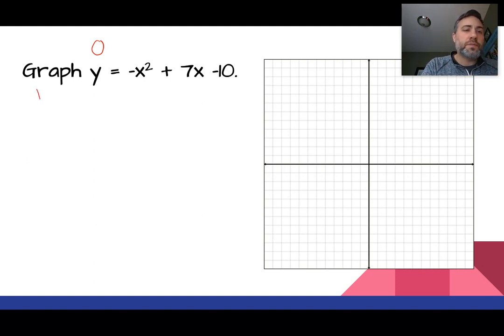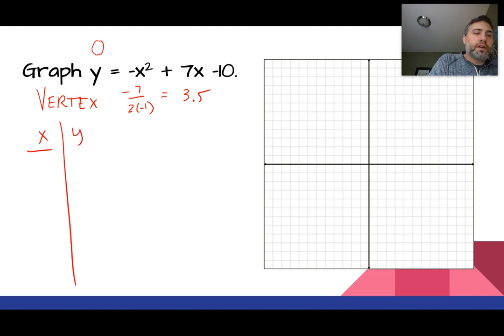So we need to start always by finding the vertex. That's the very first thing we must do in this equation right here. So let's find the x value of the vertex. Now, you guys probably remember how to do that. It's negative b over 2a. So we'd say negative 7 over 2a, which would be times negative 1, and that looks like it's just going to be a positive 3.5. So let's go ahead and make our table. So x and y, and let's put in our x value of the vertex, so 3.5, and we're going to figure out our y value.